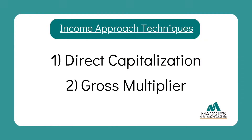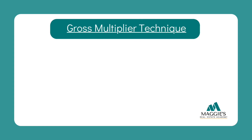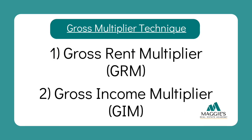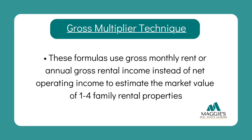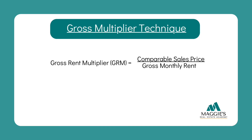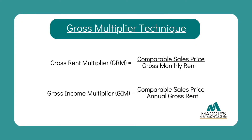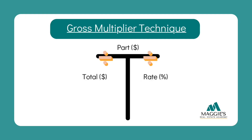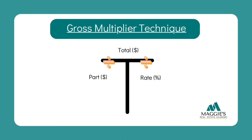Now let's talk about the second technique for the income approach: the gross multiplier technique, which includes the gross rent multiplier and the gross income multiplier. These formulas use gross monthly rent or annual gross rental income instead of net operating income to estimate the market value of one-to-four family rental properties. The gross rent multiplier is found by dividing market value by gross monthly rent, and the gross income multiplier is calculated by dividing sales price by annual gross rental income. You can use the T-chart by flipping the total and part sections and changing the percentage column to GRM or GIM.